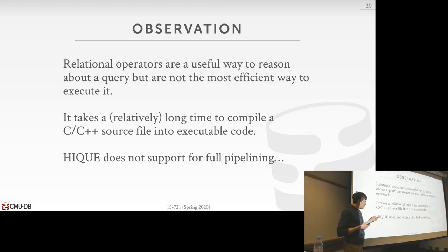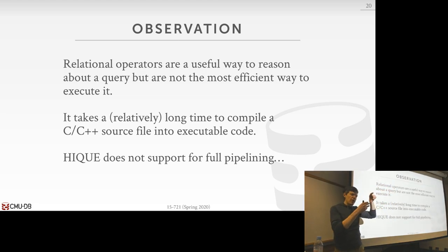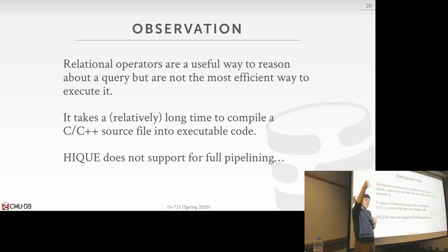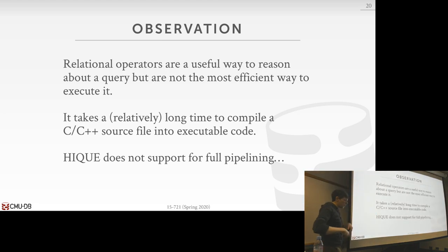Another issue with HiQ is they don't support full pipelining — they still generate per-operator for loops, still have an emit function to shove tuples up to the next operator which has its own for loop. They can do predicate pushdown so the predicate is evaluated at scan time, but everything else up the query plan still uses the next-call pattern.